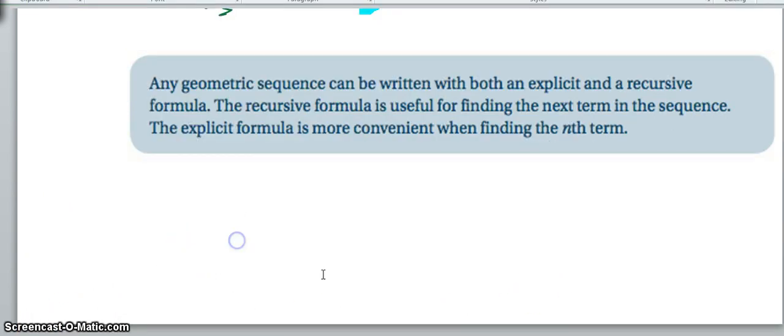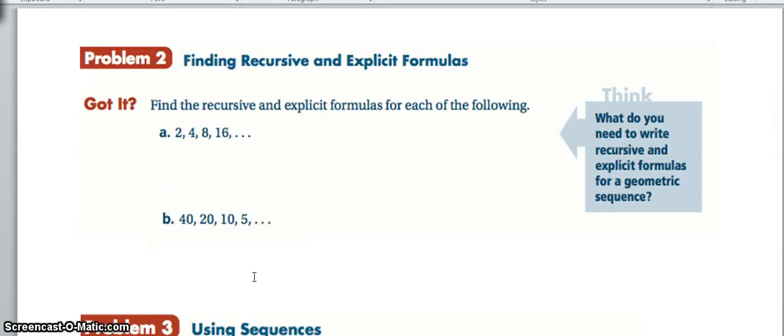So as we see here, any geometric sequence can be written with both explicit and recursive formulas. So we're going to look down here and make sure that we can find both of those for any geometric sequence. So first thing we want to do is think about what is the ratio and then what's the starting term? Are we going to make it recursive or explicit?